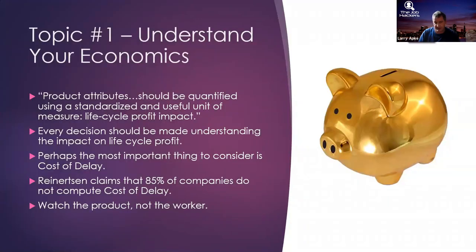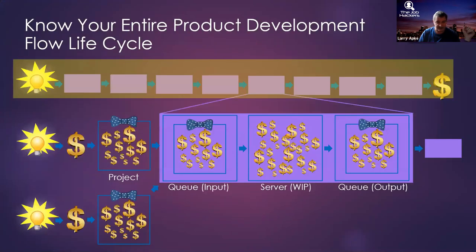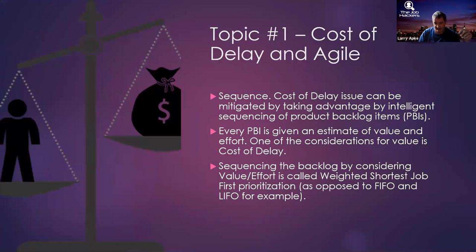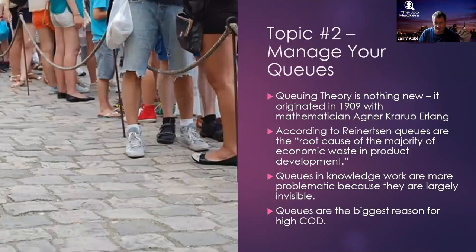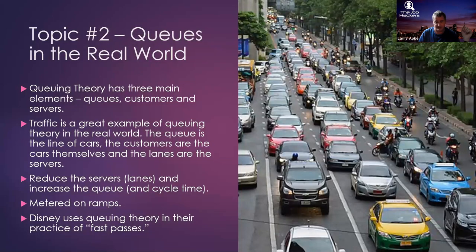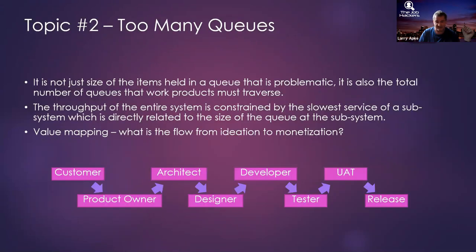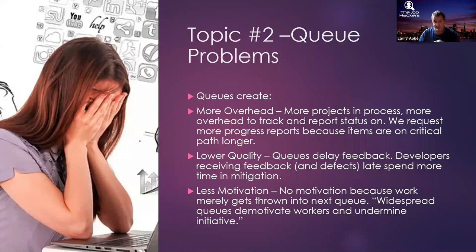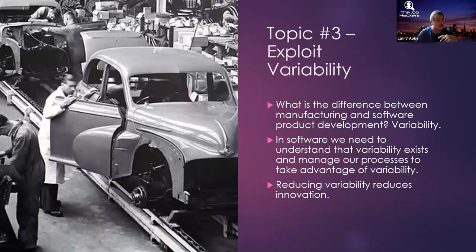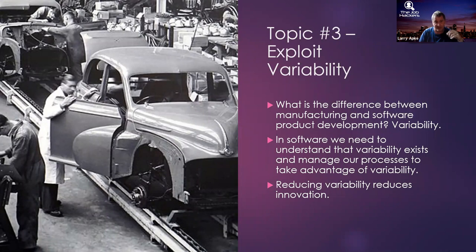The first and most important of the seven topics is to understand economics and make all decisions based on economics for the life cycle profit impact. We talked about queues, and the fact that queues are a major problem of economic waste, according to Reinertsen. And topic number three, which we just finished yesterday, is the topic of exploiting variability.